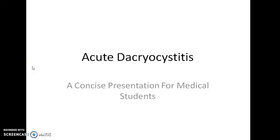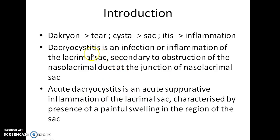Hello guys, this is Indian Medico and in this video we are going to see about Acute Dacryocystitis. This is a concise presentation for medical students. Dacryon means tear, cyst means sac, and itis means inflammation. So Dacryocystitis means inflammation of the tear sac.